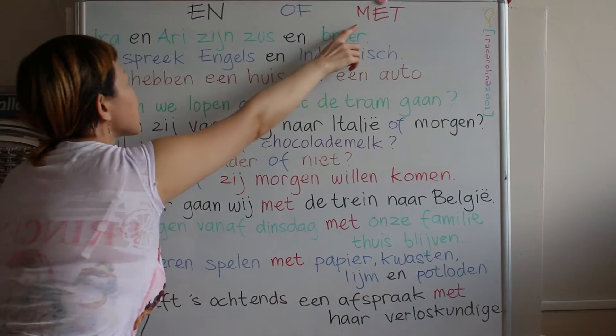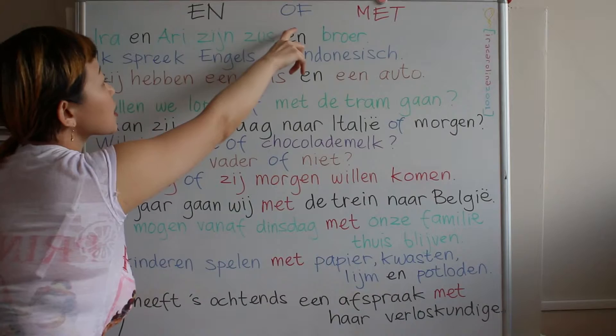'Met' — it means 'with'. So the three words we are learning today in Dutch are: 'en' meaning and, 'of' meaning or, and 'met' meaning with.